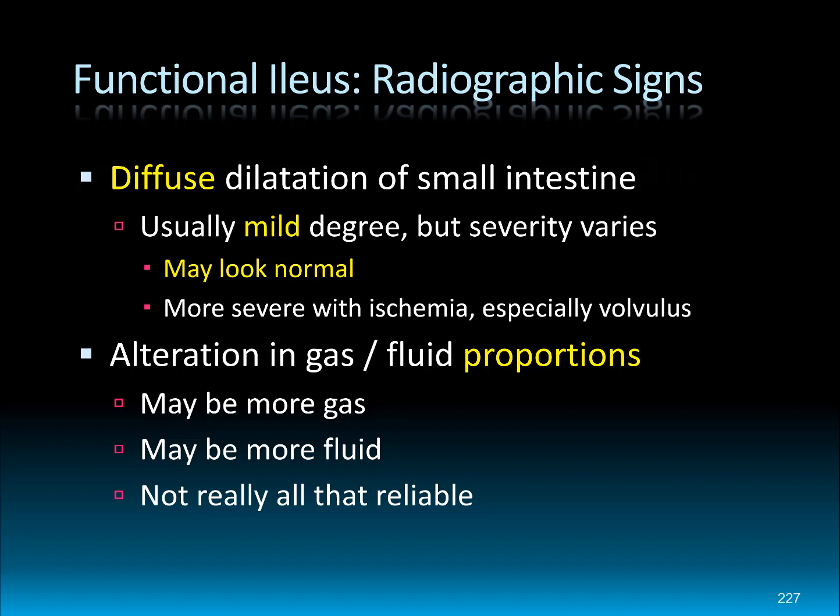Radiographically, a functional ileus will show diffuse dilatation of the small intestine and it's usually mild — in contrast to mechanical ileus, which shows more focal dilatation and is usually more severe. A key point: functional ileus may look radiographically normal. So if a patient has clinical GI signs but the radiographs look normal, that dog or cat probably still has a functional ileus. When we do see signs, it's usually diffuse and a mild degree of distension.